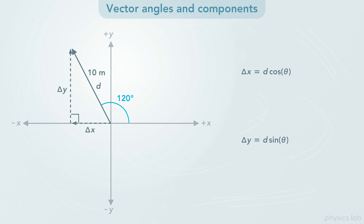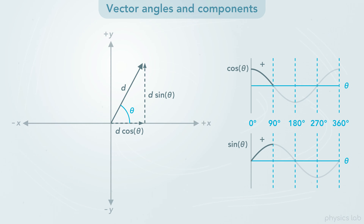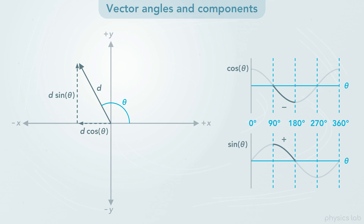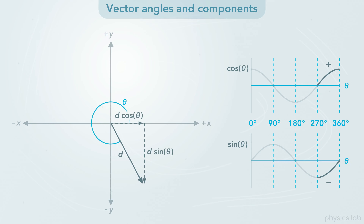The second way we can find the components is by using the conventional angle, counterclockwise from the positive x axis. If we plug 120 degrees into the cosine function, we actually get negative 5 meters for delta x, and we get positive 8.7 meters for delta y. So by plugging in this angle, the sine and cosine functions keep track of the positive and negative signs. It might seem weird using right triangle trig functions with an angle that's outside of the triangle, but this is how the functions work. If you graph the sine and cosine functions, we can see where the output is positive and negative. The sine and cosine graphs extend in both directions, so if we use negative angles going clockwise, the functions give us the same thing.